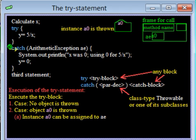A0 is assigned to the parameter, and the catch block is executed, after which execution of the TRY statement terminates. The catch block can reference AE, so it can reference object A0.